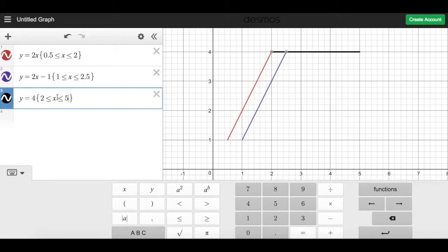And I can do that using this expression. My x values only take place between 2 and 5, and this says including 2 and 5. So I'll call that the top of my C.